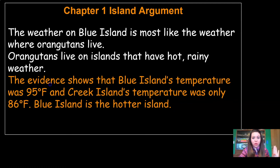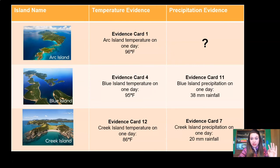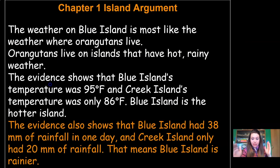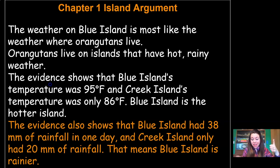Let's go back and grab our precipitation evidence. So 38 millimeters for Blue Island and 20 millimeters for Creek Island — we need to make sure we show Blue Island was rainier. Here's what I added: the evidence also shows that Blue Island had 38 millimeters of rainfall in one day and Creek Island only had 20 millimeters of rainfall. That means Blue Island is rainier. So we've used evidence to show that Blue Island is hotter and that it's rainier.